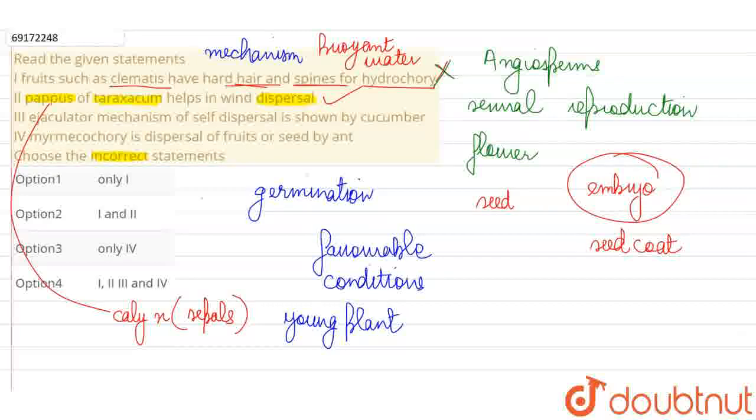And typically, our sepals are green leaf-like structures. But sometimes, if a plant has air currents to disperse its seeds, these sepals are modified. They are changed into slender hair-like structures or feathery structures.